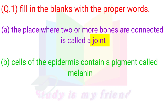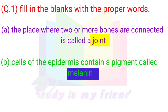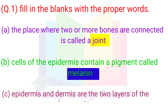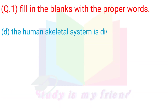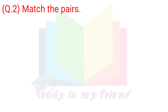B. Cells of the epidermis contain a pigment called melanin. C. Epidermis and dermis are the two layers of the human skin. D. The human skeletal system is divided into two parts.